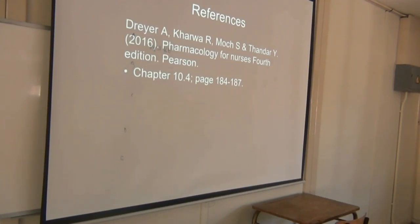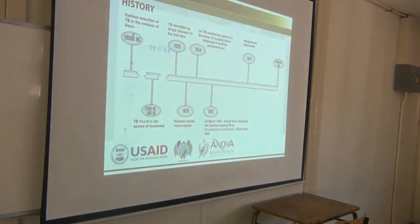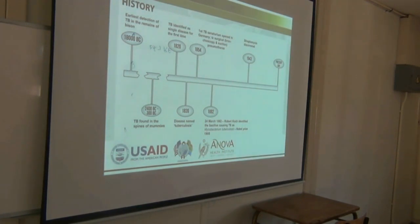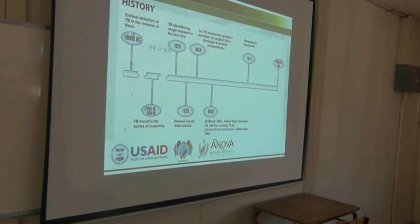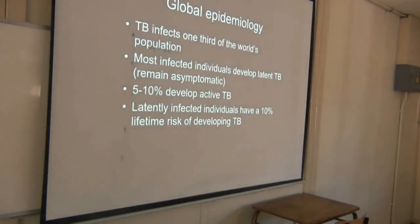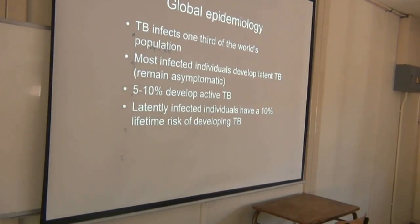TB is an ancient disease. The earliest TB remains were discovered around 18,000 years before Christ, so the mycobacterium is very old. They discovered it in mummies from Egypt. It is a disease that has come and gone, and as long as we have HIV it's probably going to stay with us. Globally, one third of the world's population gets infected with TB. Most individuals will not get active TB — they will get latent TB.